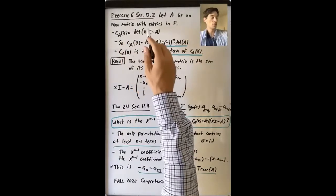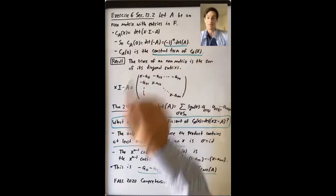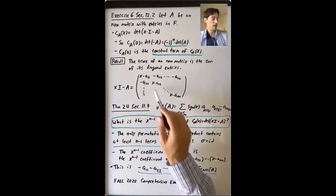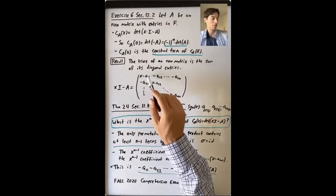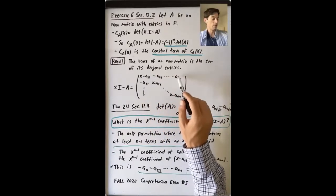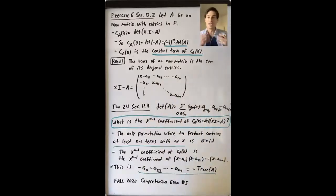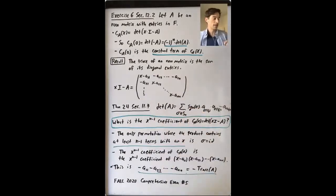The characteristic polynomial is the determinant of the matrix X times I minus A. What does X times I minus A look like? It has X minus A_{11}, minus A_{12}, over to minus A_{1n}, minus A_{21}, and so on — I'll name the entries of A as A_{ij}.